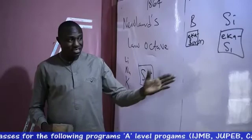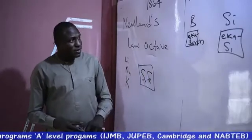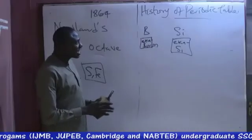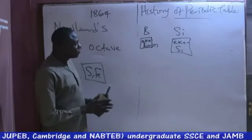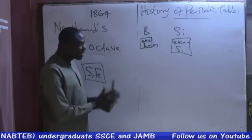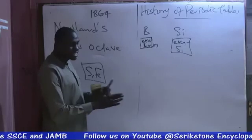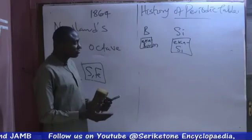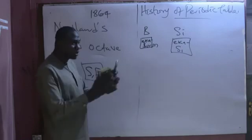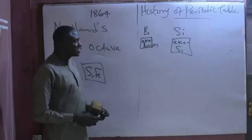Remember that it was Moseley who discovered the atomic number using the X-ray experiment. So, the modern periodic table that we are going to look at in our next episode — we are going to look at how elements have been grouped, the groups which are the same as families, as well as the periods which are elements on the same horizontal line, the relationships between them, what makes elements occupy the same group, and what makes them belong to the same period.